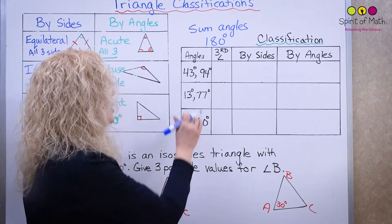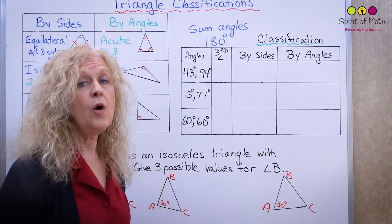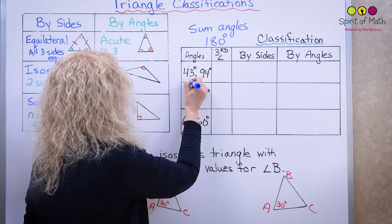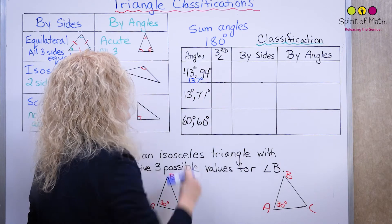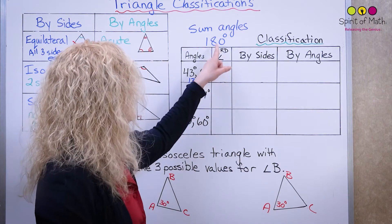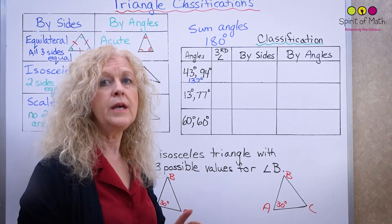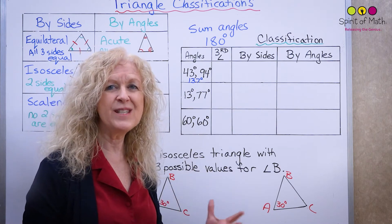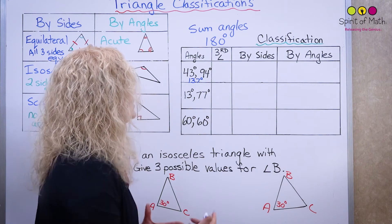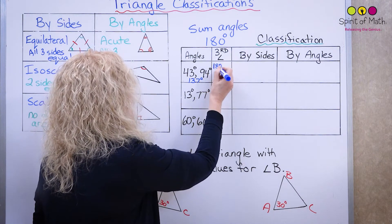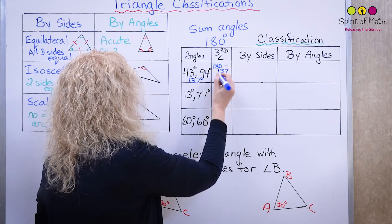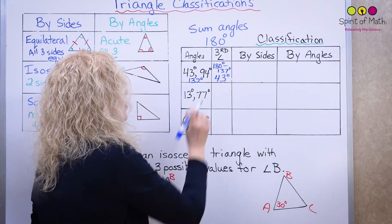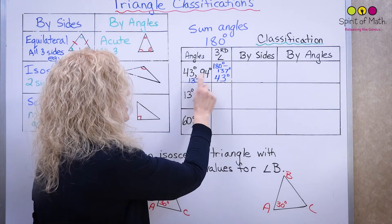Let's do the first one: you've got 43 and 94 degrees. If you add those two together, you get 137 degrees. So 180 minus 137 equals 43 degrees — your third angle is 43 degrees.